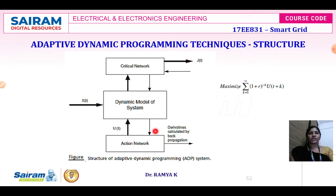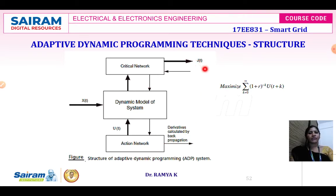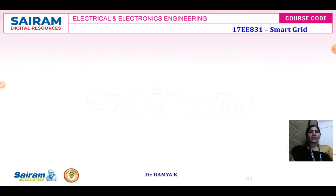The action network provides optimal control to minimize or maximize the cost-to-go function. If we want to minimize or maximize the value of j(t), we use the action network to control whether we achieve the minimum or maximum value of the cost-to-go function j.